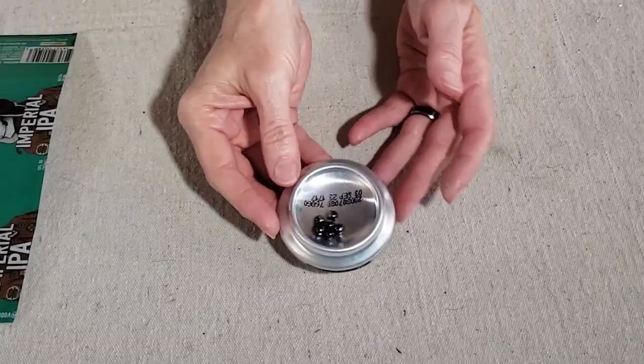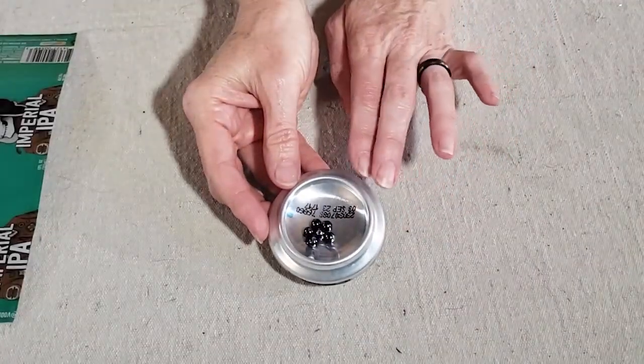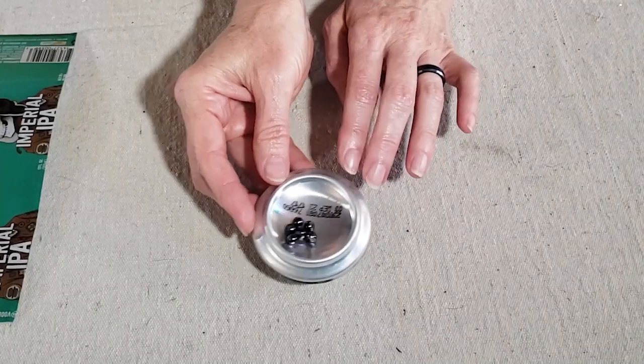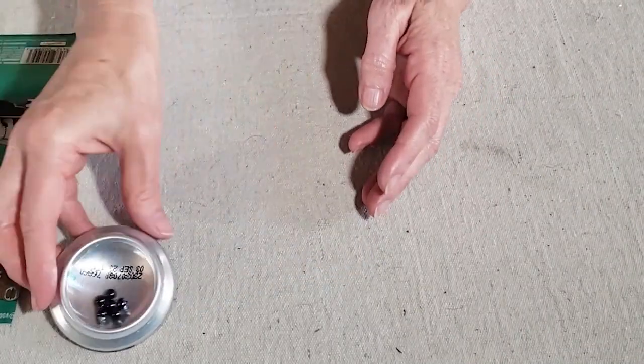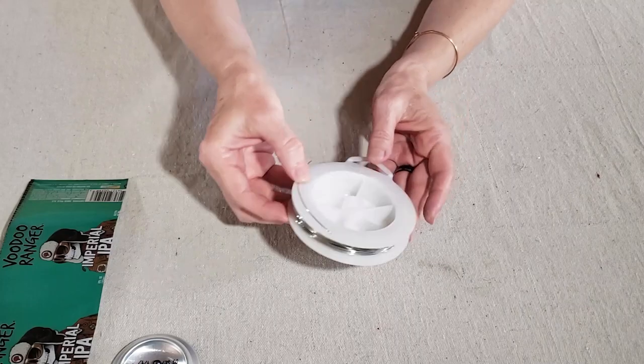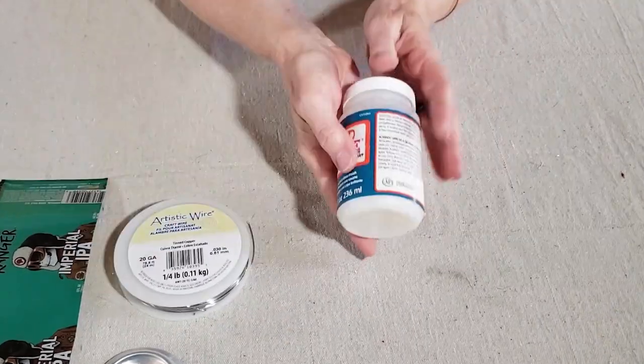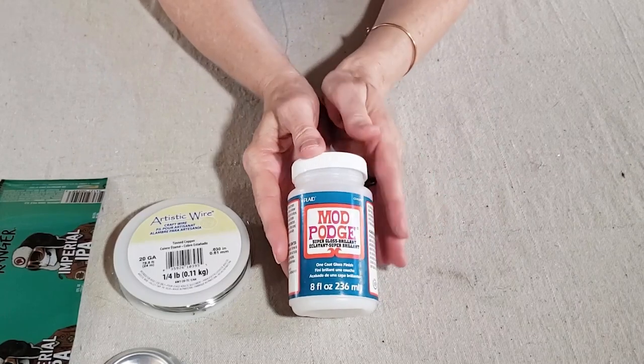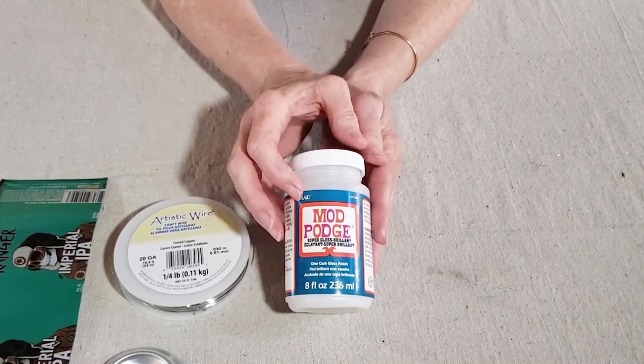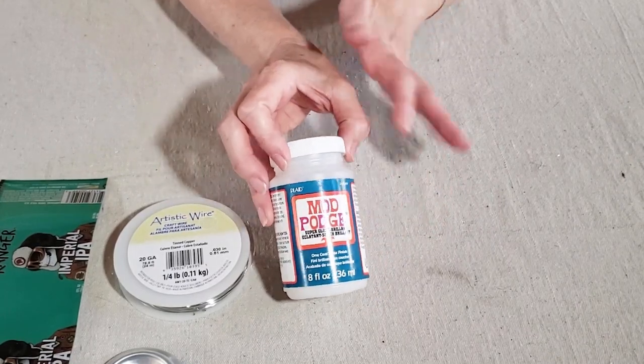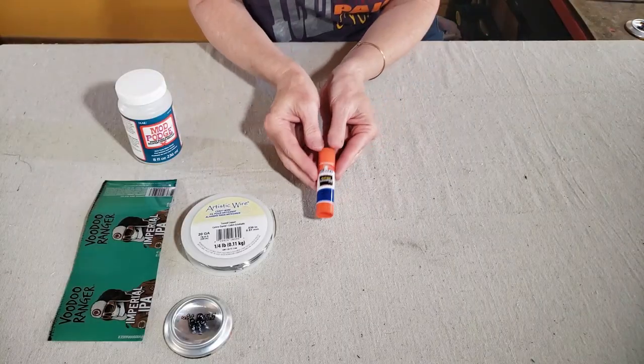You also need a couple of small black round beads. I think these are about five millimeters. So you need two per bumblebee. You need some 20 gauge wire. You can use any color you want. I'm going to be using some silver. You also want some kind of glue and sealer. I have this Mod Podge high gloss, but you could use regular Mod Podge.